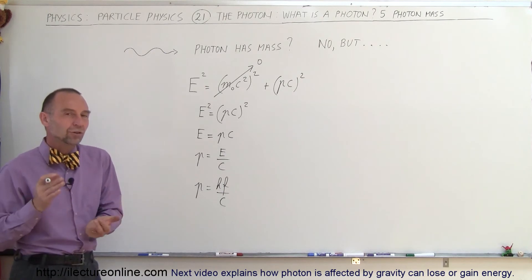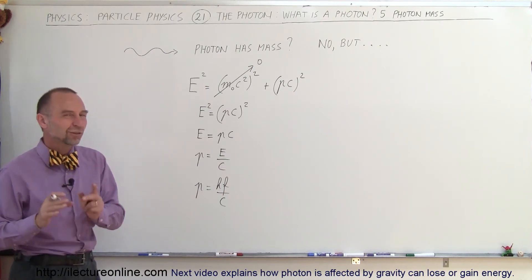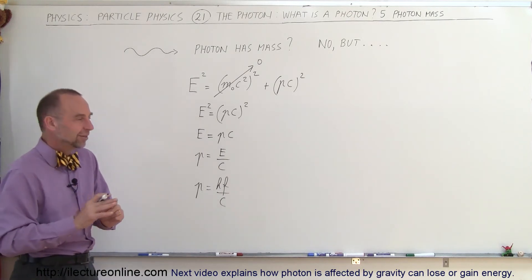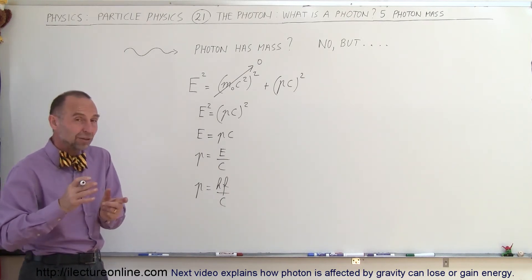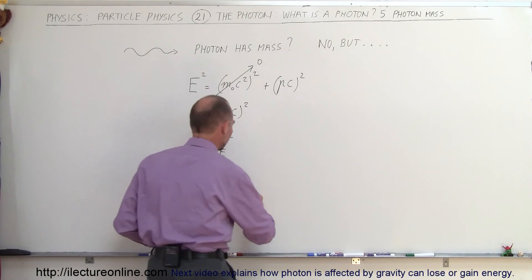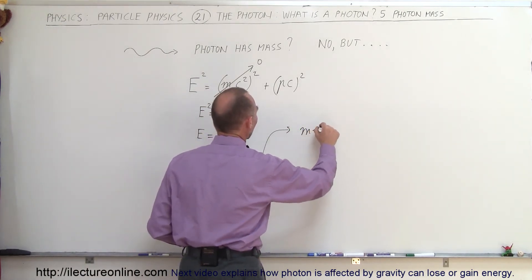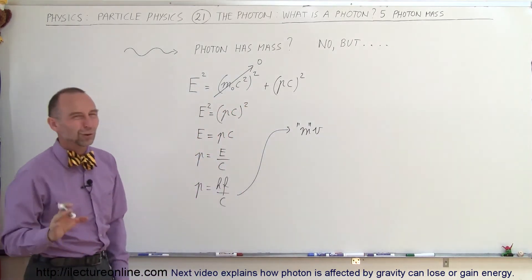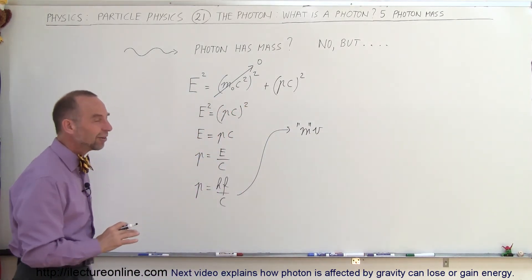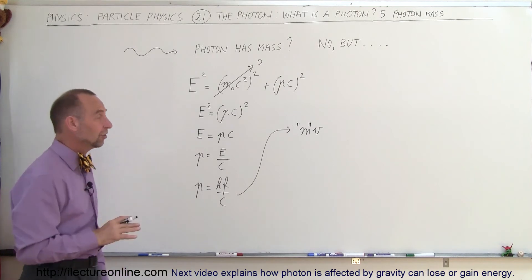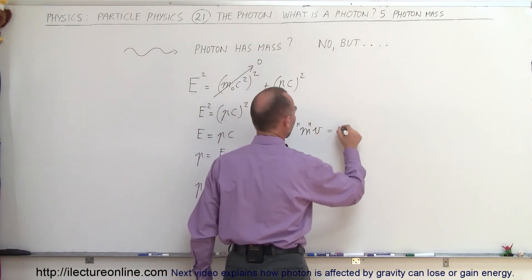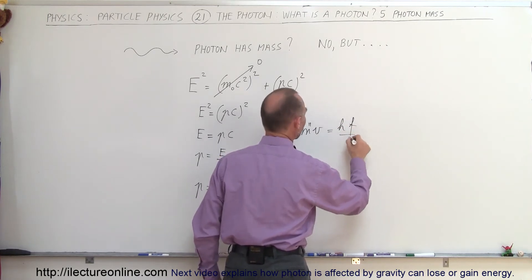And of course, the momentum for any particle is always the mass times the velocity. So here things become a little strange. So here we're going to go on a limb and say, okay, let's say that the momentum is mass times velocity. So we can say that the mass times velocity, and I'll put mass in quotation marks, because of course, we know photon really doesn't have mass, but it sometimes acts as if it does.